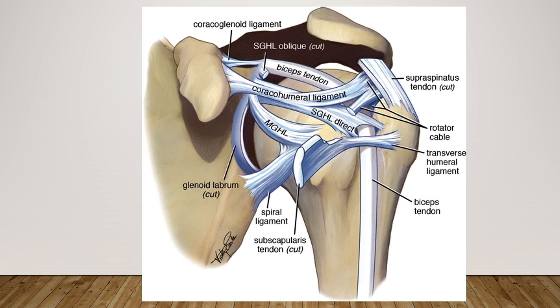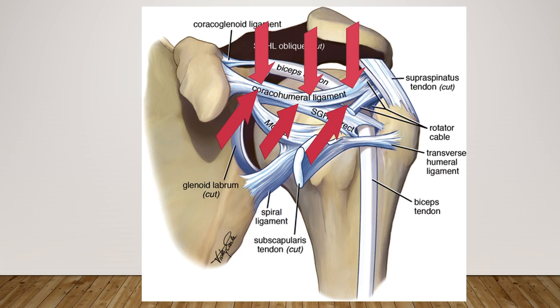For better understanding, I am going to split the coracohumeral ligament into three parts: the central, middle, and peripheral part of the coracohumeral ligament.